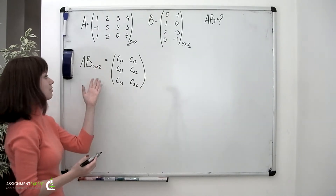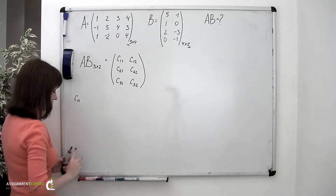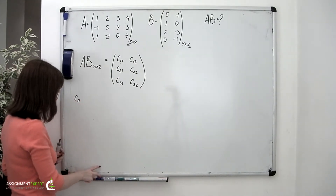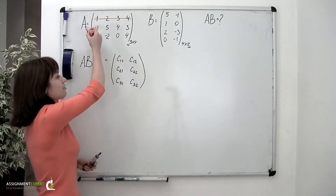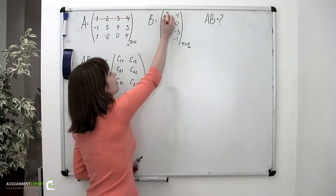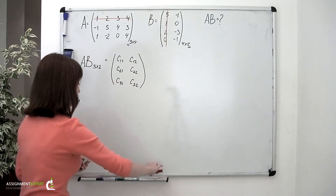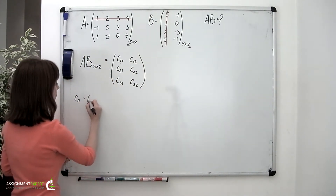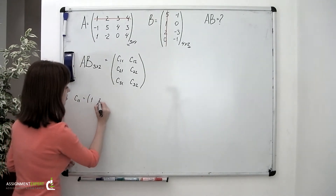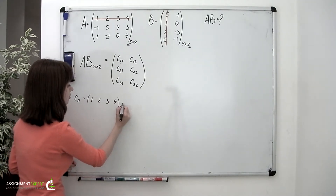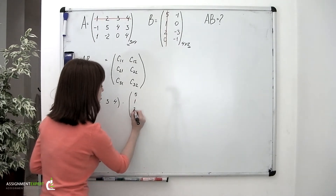Now let's find the entries for this matrix. Element C sub 1,1 is found by multiplying the elements of the first row of the first matrix by the elements of the first column of the second matrix. So we have 1, 2, 3, 4, multiplied by the column 5, 1, 2, 0.